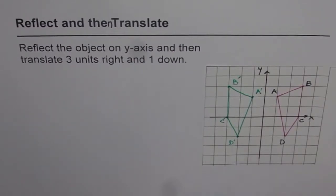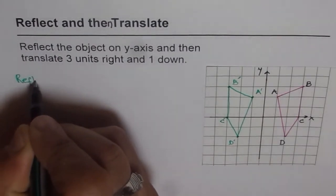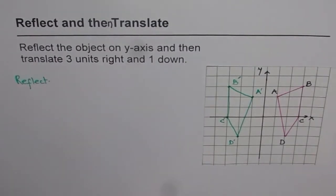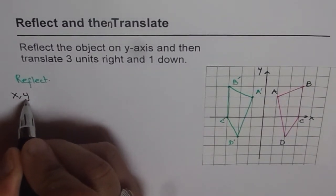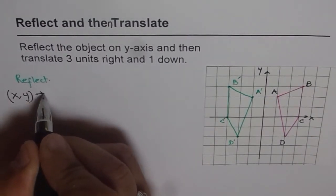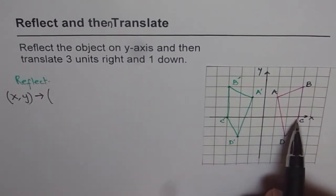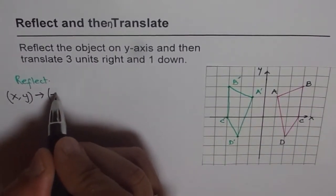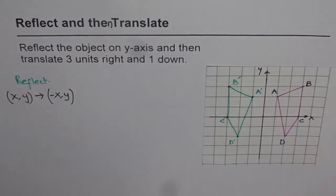So what you note here is, whenever we reflect, when you reflect, what happens? The x and y coordinates of the object change to y remains same, the height remains same, only x value changes, it becomes negative of x. Do you see that? So that is the change which happens.